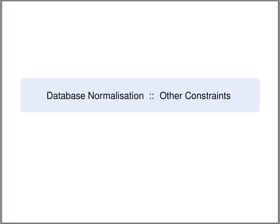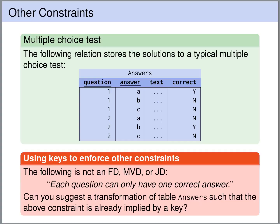Besides functional dependency and multivalued dependencies, we also have other kinds of constraints that are interesting for database design. For instance, consider the following table. This table stores the answers to questions of a multiple choice test.